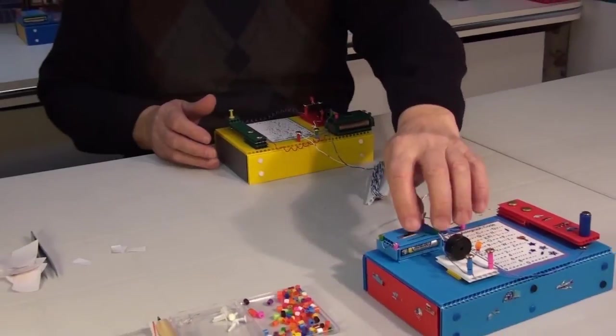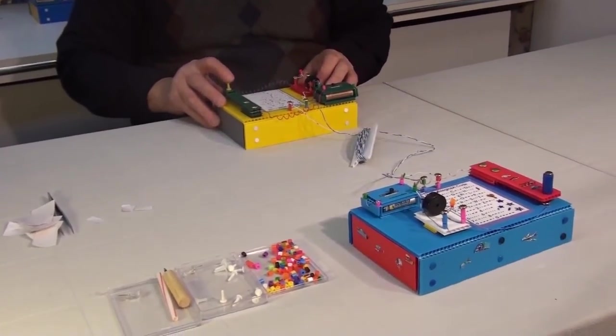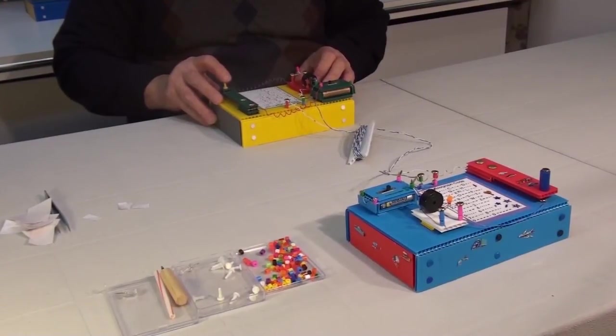This way, when we press the telegraph key on this apparatus, the signal travels along the wires and the other apparatus starts working. The receiver now can decode the message.